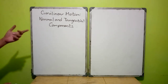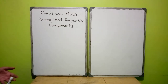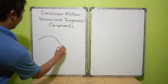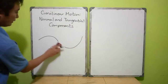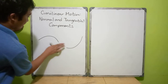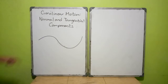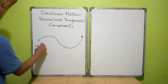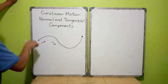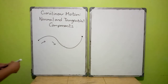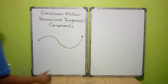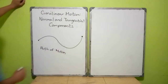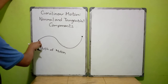Today we will be discussing normal and tangential components — we will divide the direction of your motion into normal and tangential components. To start, let us draw a curved line. This is your curved line, and you are moving from an initial point to a final point, from left to right. This is the path of your motion — your start and your finish.